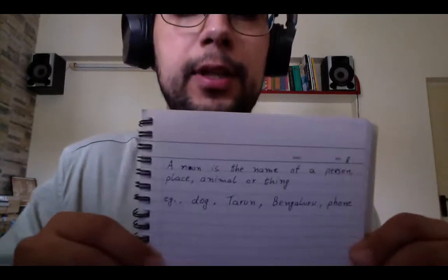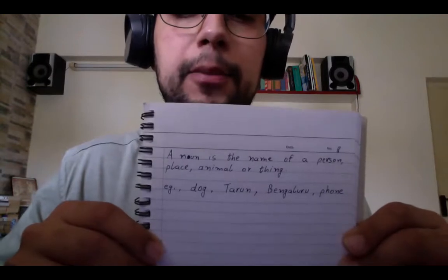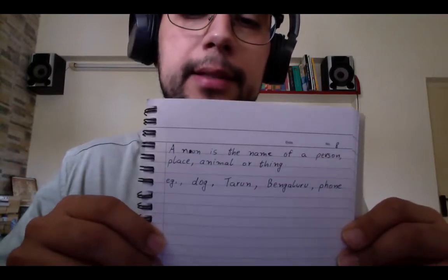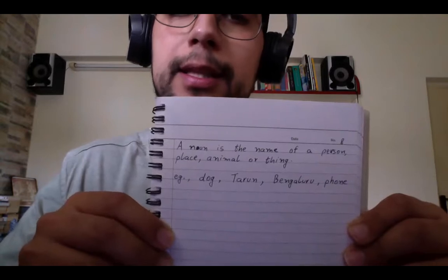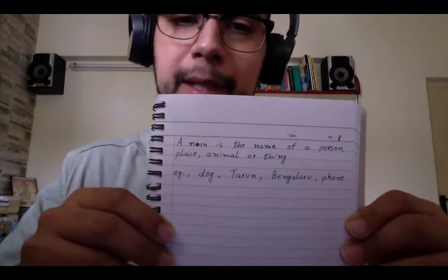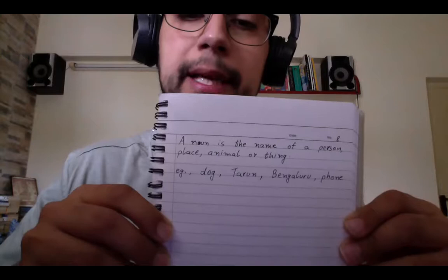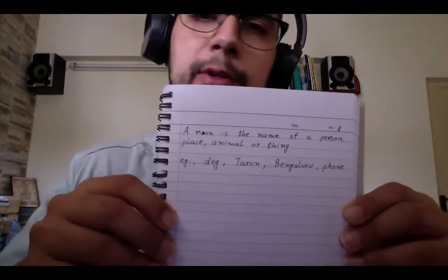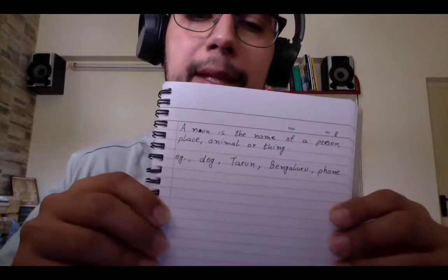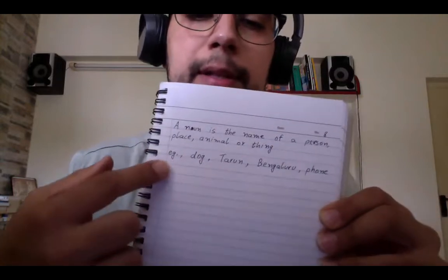Can you guess what nouns are? A noun is the name of a person, a place, an animal or a thing. It's the name of a person, a place, an animal or a thing. All of us use nouns when we are talking all the time. I've even given you some examples.